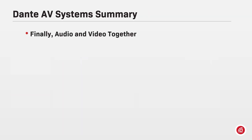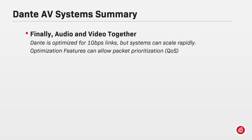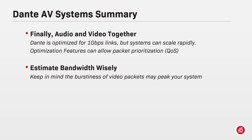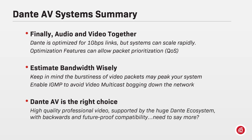Summarizing this chapter: Dante AV is optimized for 1 Gigabit links but systems can scale rapidly. For saturated systems, QoS allows prioritization of PTP clocking, AV media, and Dante control packets over other types of traffic in a convergent network. When designing a system with Dante AV, estimate bandwidth wisely — keep in mind the burstiness of video packets, consider the max rate, and always add additional reserve to avoid peaks. Enable IGMP on all switches to avoid video multicasting bogging down the network, and remember to configure only one as the IGMP querier. Dante AV is the right choice for your projects, offering high quality video with ultra low latency, supported by the vast and growing Dante ecosystem with hardware and software backwards compatibility and future-proof readiness.